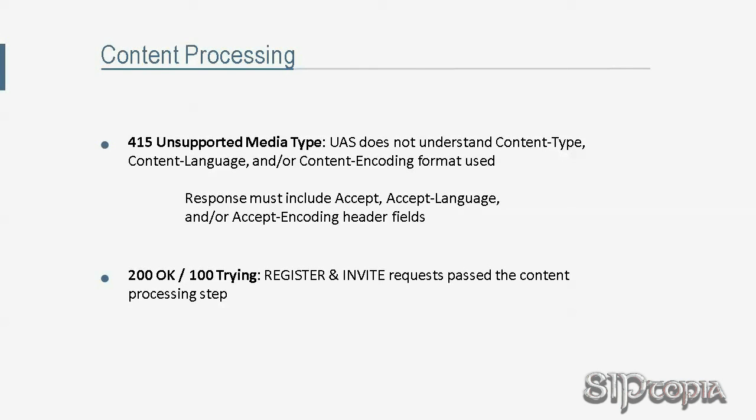RFC 3261 calls the next section content processing. If a message body exists, the user-agent-server checks content-related header fields like Content-Type, Content-Language, and Content-Encoding to determine if the formats used in the request are understood. If the formats are understood, processing moves on to the next section. If one or more formats are not understood, the UAS could respond with 415 Unsupported Media Type, which must include Accept, Accept-Language, and/or Accept-Encoding header fields based on the specific format that was not understood.